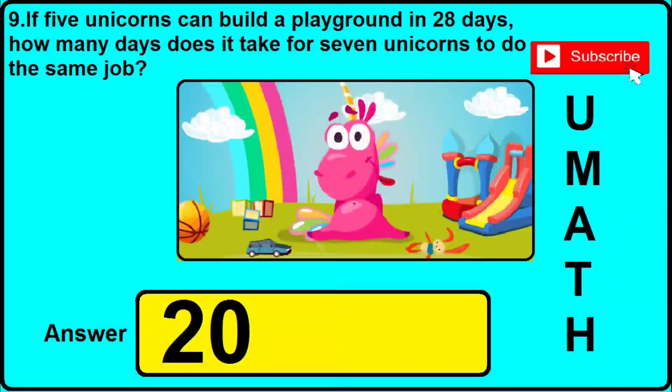In version 4 of this question: if 5 unicorns can build a playground in 28 days, how many days does it take for 7 unicorns to do the same job? The correct answer is 20.